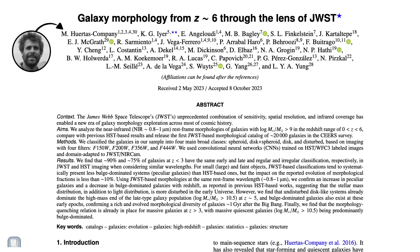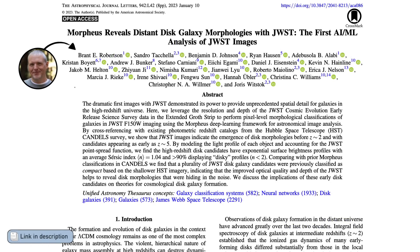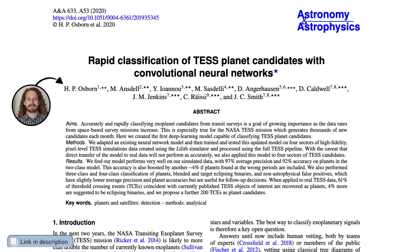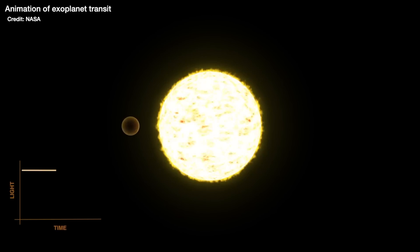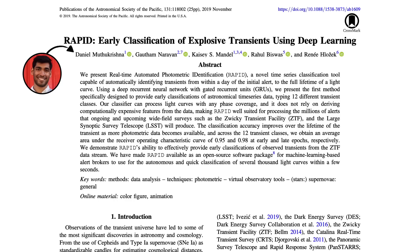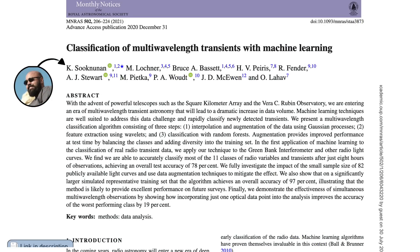Of course, Galaxy Zoo is not the only example of classification of data in astrophysics. AI algorithms have been deployed to classify galaxies in JWST data, or to find planets in data from telescopes that monitor the brightness of stars — where they look for dips when the planet passes in front of its star, blocking a little bit of light — or classifying those things that change on the sky as either supernova, common asteroids, or flaring black holes.